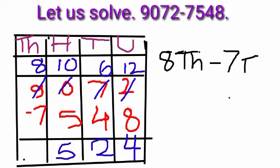8000 minus 7000 is equal to 1000. The answer is 1524.